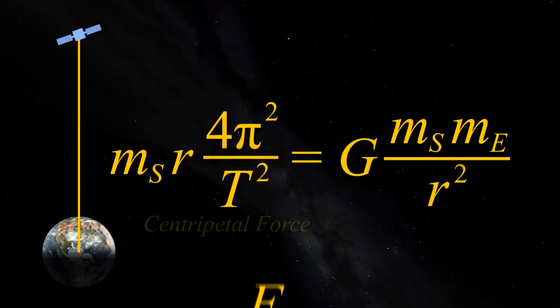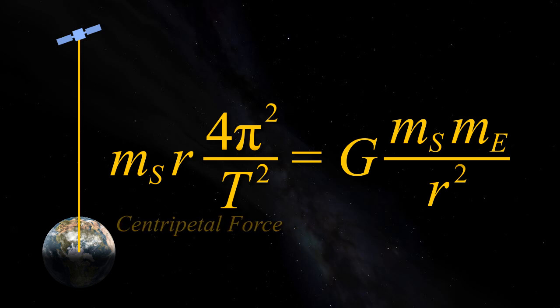We saw in part 3 how gravity provides the centripetal force for orbiting bodies, and we can use those same equations to calculate the radius of a geostationary orbit. The mass of the satellite cancels out. As we found in part 3, the mass of the orbiting body is irrelevant to the orbit itself.